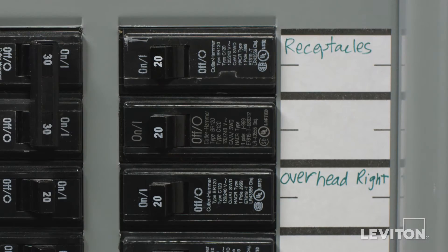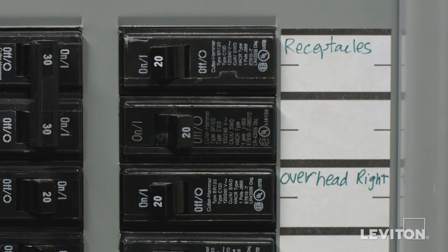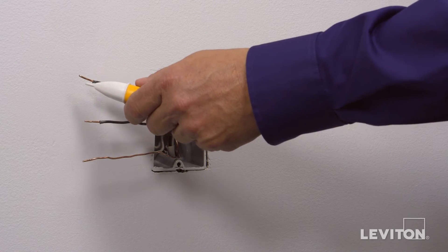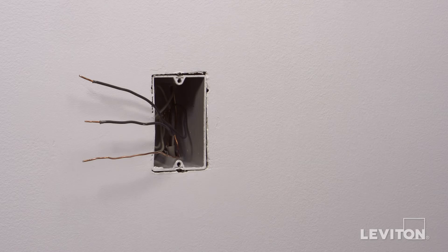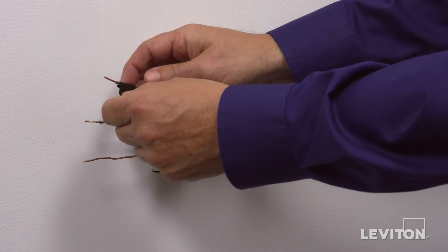Once identified, turn off the circuit breaker to shut power and test to ensure that the power is off. Use a small piece of electrical tape to label the hot wire.